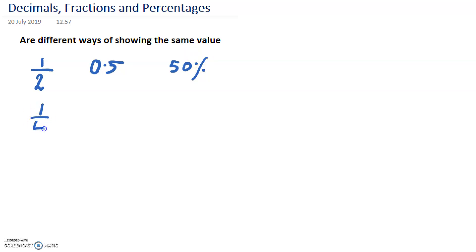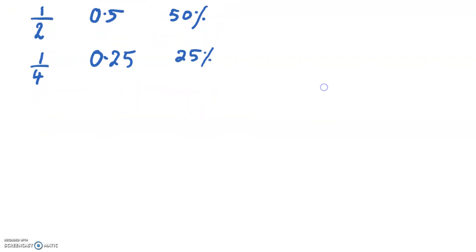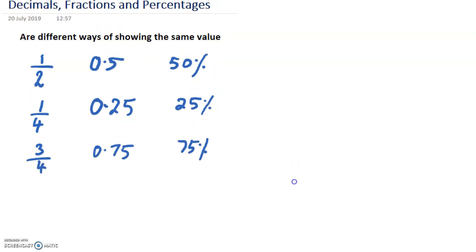A quarter: the fraction is 1 over 4, the decimal is 0.25, and it is 25%. Three quarters: the fraction is 3 by 4, the decimal is 0.75, and it becomes 75%. Now what about 4 by 5?